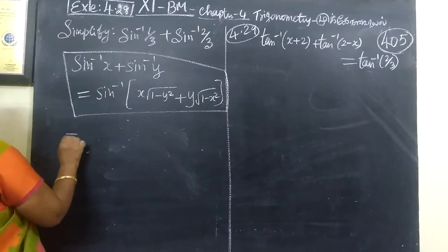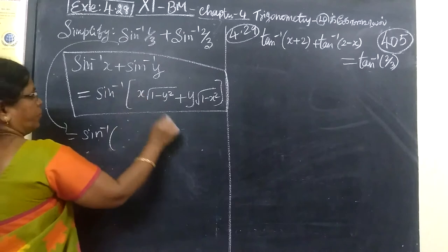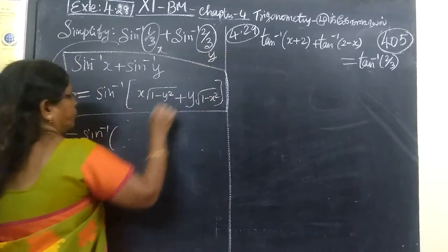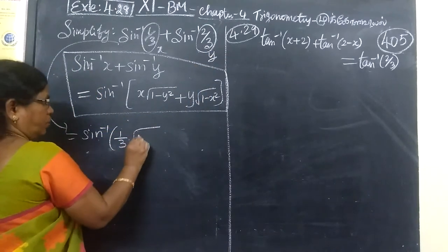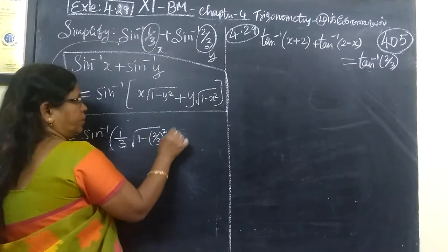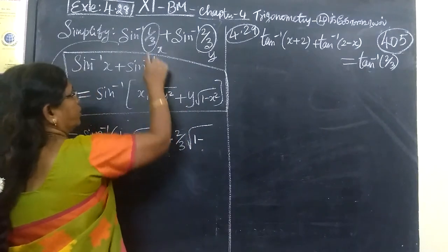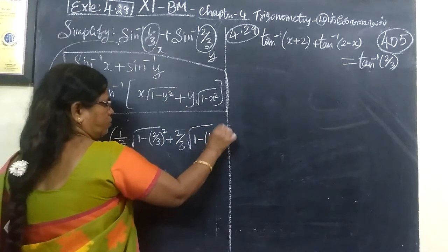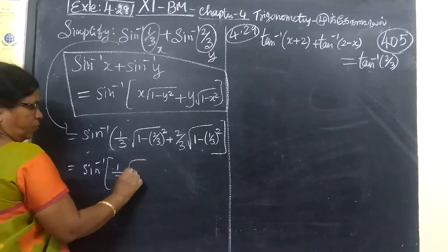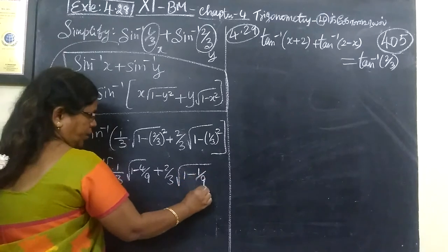If you have this question, this is x and this one is y. So instead of x, we write 1 by 3 times root of 1 minus y squared, that is 2 by 3 whole square, then plus y, which is 2 by 3, times root of 1 minus x squared. x squared means 1 by 3 whole square. That is equal to sin inverse of 1 by 3 times root of 1 minus 4 by 9, then 2 by 3 times root of 1 minus 1 by 9.